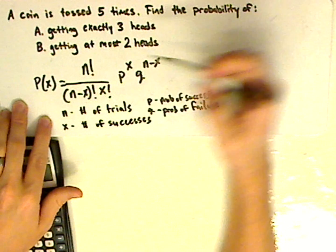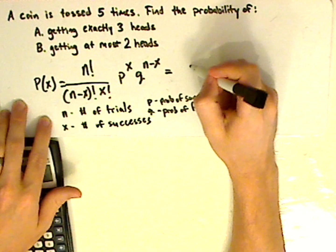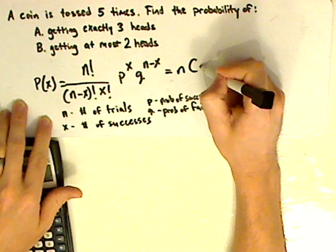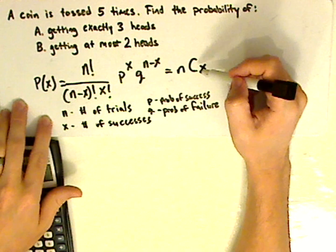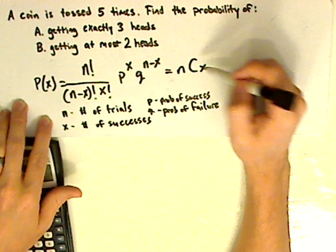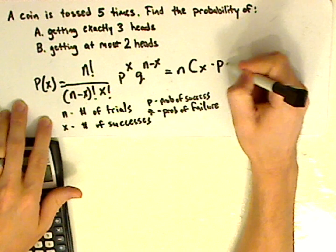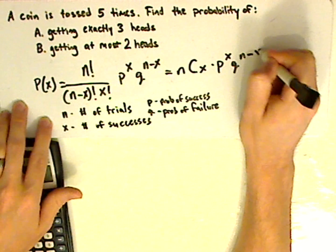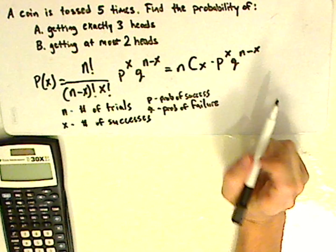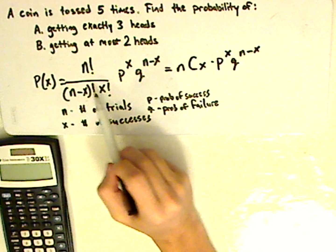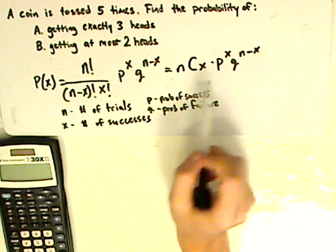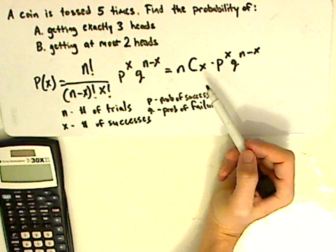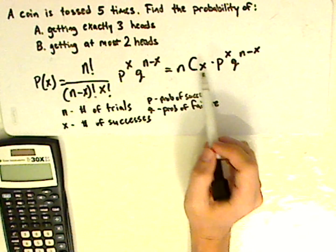Now another way to write this is using combinations. So it's N choose X combinations times P raised to the X, Q raised to the N minus X. Now on a calculator you can do either. On a scientific calculator you can actually use combinations. And it might be easier and quicker to use this formula.